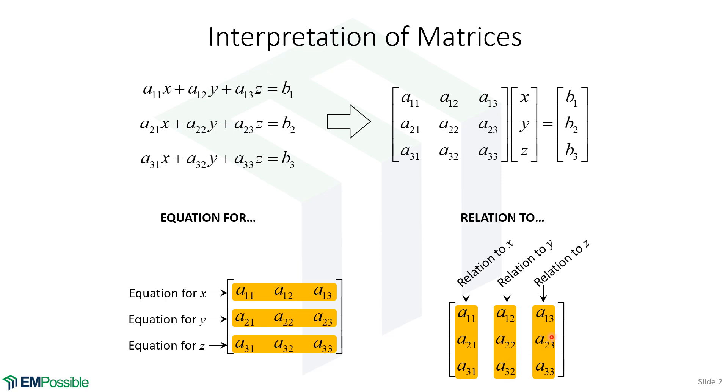A23 is describing how Z is related to Y. So it makes sense that these might be the same number or the transpose or something like that. Looking at the rows as the equation for and the columns as the relation to is going to be a very useful way to look at this.